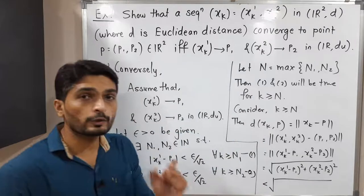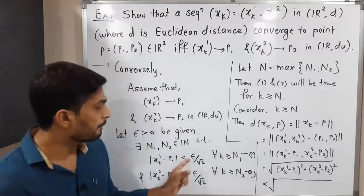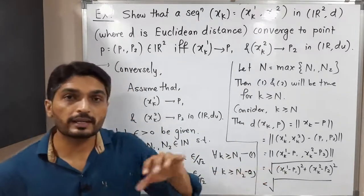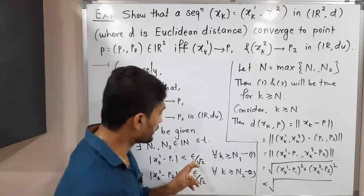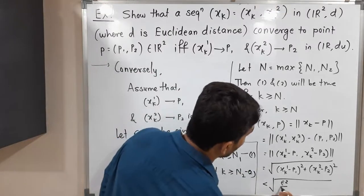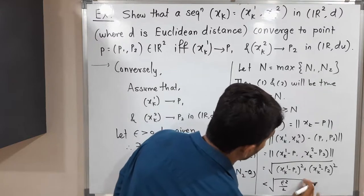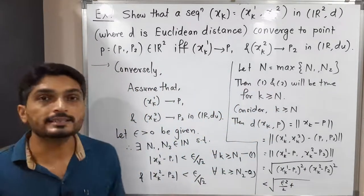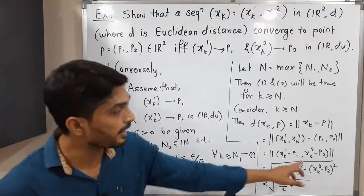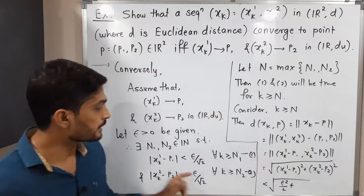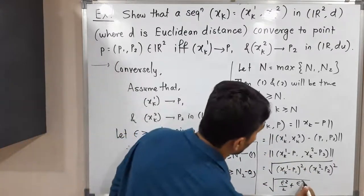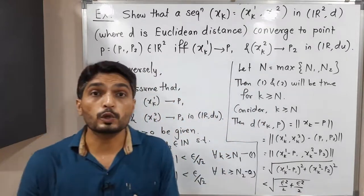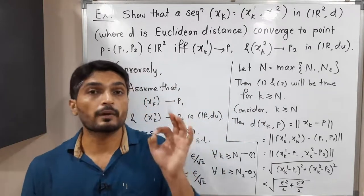Since we have stated that |xk1 - p1| < epsilon/√2, we can replace that term: this is less than the square root of (epsilon/√2)² plus (epsilon/√2)². Taking the square of epsilon/√2 gives epsilon²/2. So we have the square root of epsilon²/2 plus epsilon²/2, which equals the square root of epsilon².